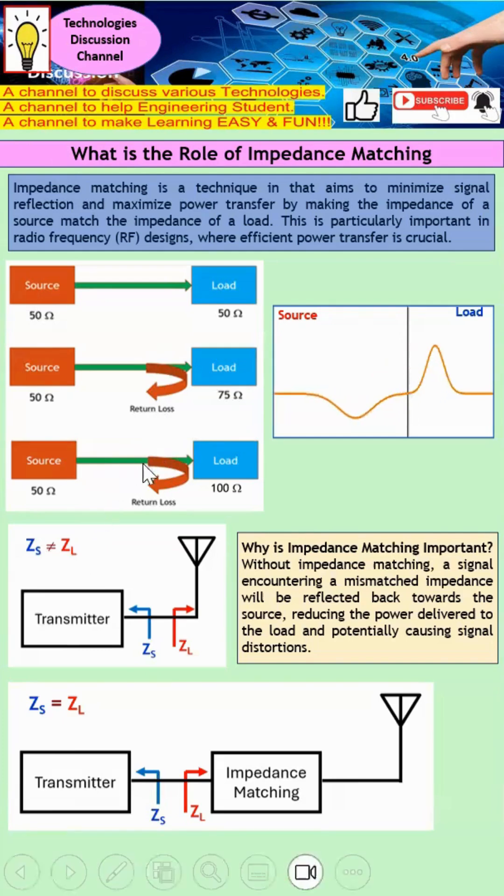Let's take a look at the third diagram. The key difference is you can see that the mismatch between the source and the load is even larger. With this, you can imagine that more will be reflected back, lesser will be transferred from the source to the load.